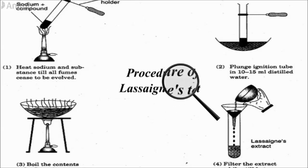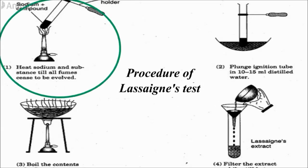Let's learn the procedure of Lassie's test. First, heat sodium and substance in a fusion tube till all fumes cease to be evolved and the fusion tube becomes red hot.